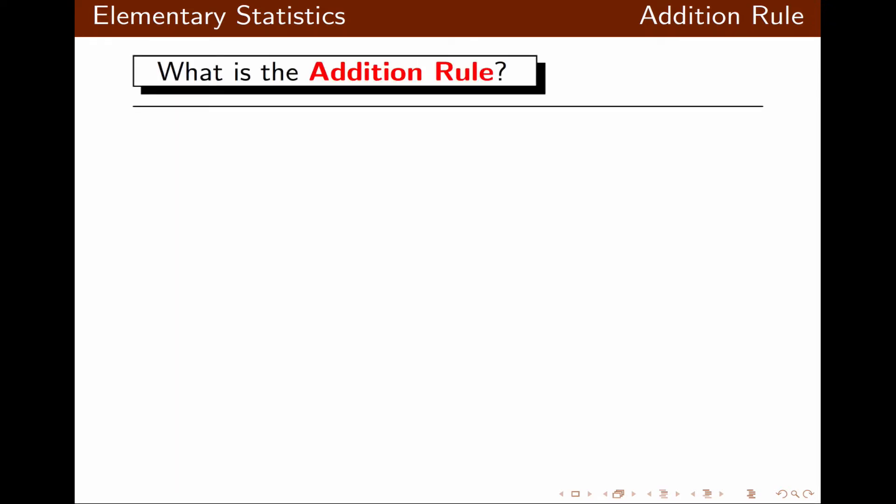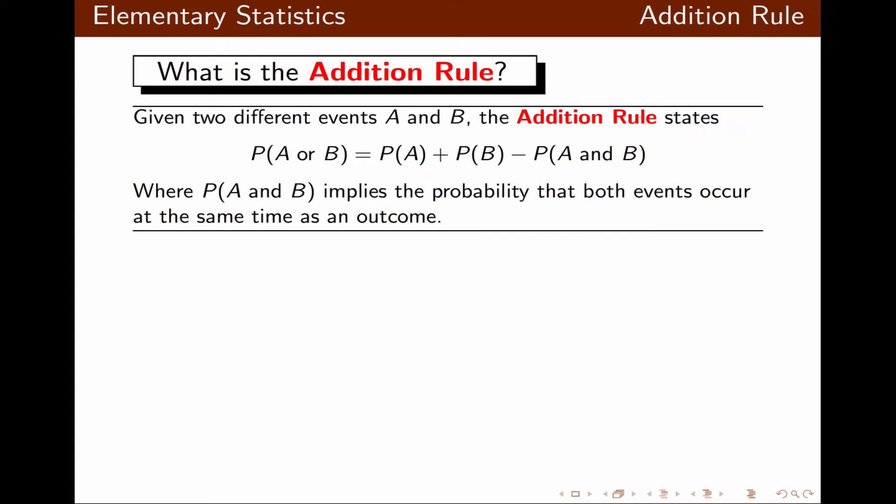First, what is the addition rule? If we have two different events, A and B, the addition rule simply states that the probability of A or B is equal to the probability of A plus the probability of B minus the probability of A and B. Probability of A and B simply implies that both events happen at the same time.